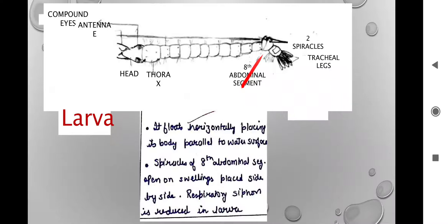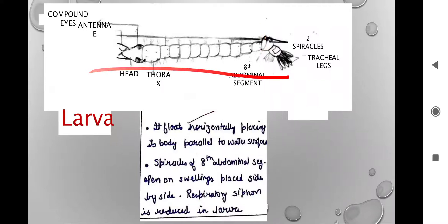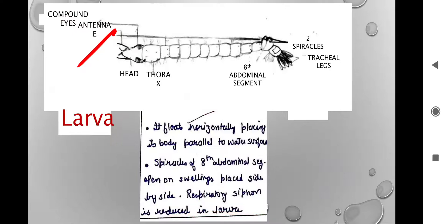If we talk of the respiratory siphon — generally in other mosquitoes the respiratory siphon is a structure that protrudes out to the water surface, helping the insect to breathe. But in Anopheles, since the larva is parallel to the water surface, the respiratory siphon is reduced in the larval stage. The larva also has compound eyes and antennae — the antennae sense vibrations and danger, while compound eyes provide a wider vision.